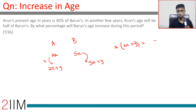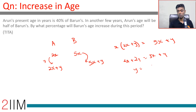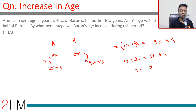So 2 times (2x plus y) equals 5x plus y, giving 4x plus 2y equals 5x plus y, which means y equals x. Barun's age goes from 5x to 6x — a 20 percent increase.